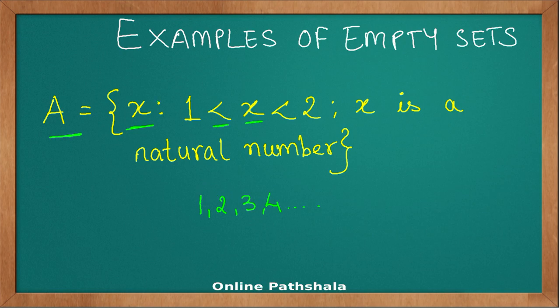Therefore, it is impossible to have any natural number between 1 and 2, and therefore the set A is a null set or you can also write it as phi. It is an example of an empty set.